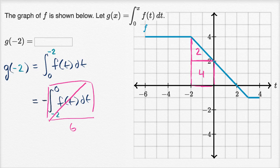So this part is six, but we can't forget that negative sign. So this is going to be equal to negative, negative six. And so g of negative two is negative six.